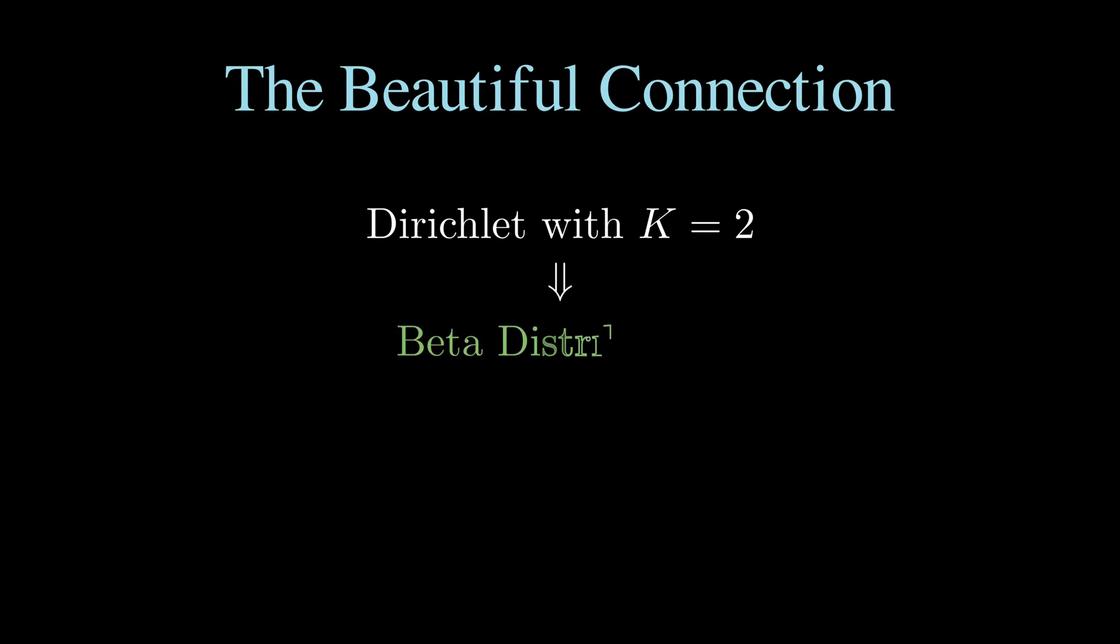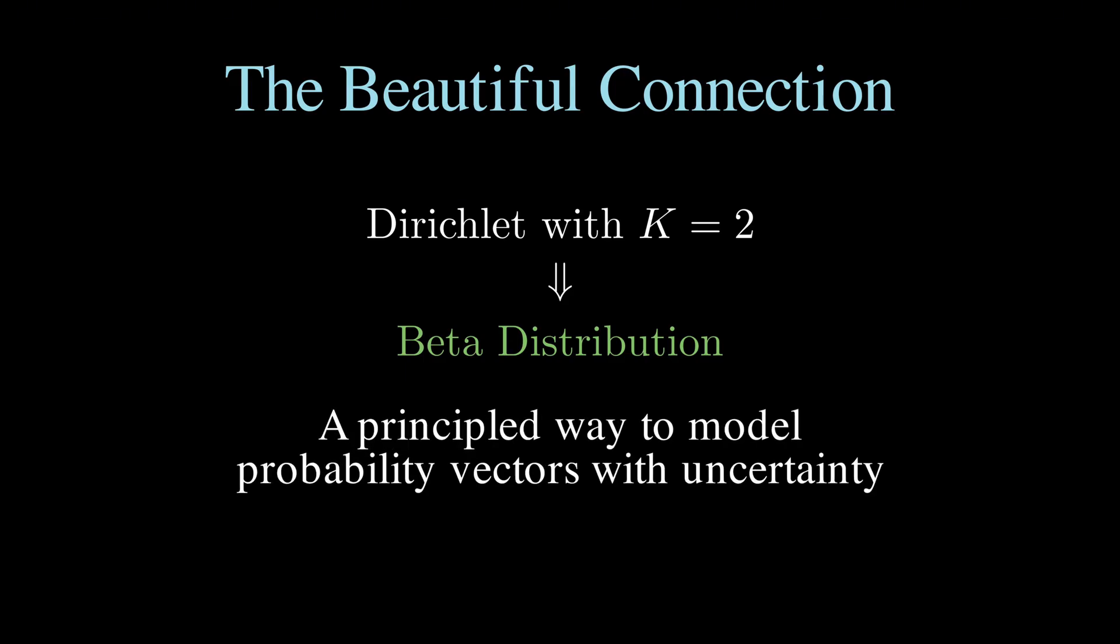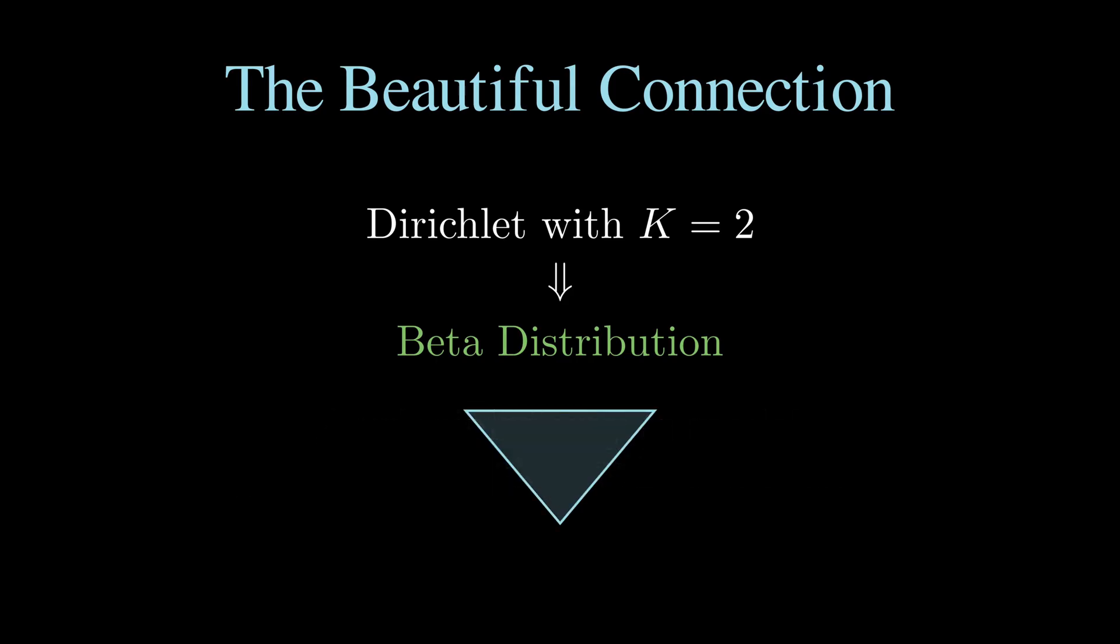The connection between the beta and Dirichlet distributions is so fundamental that if you take a Dirichlet distribution with just two categories, it mathematically reduces to exactly the beta distribution. This relationship shows us that the Dirichlet distribution isn't some exotic mathematical construct, but rather a natural and inevitable extension of ideas we already understand, waiting there in the mathematical landscape to be discovered and applied to real world problems, where we need to model uncertainty over probability vectors.